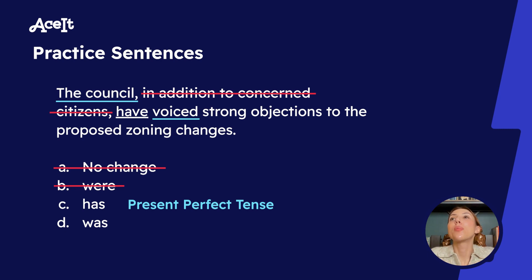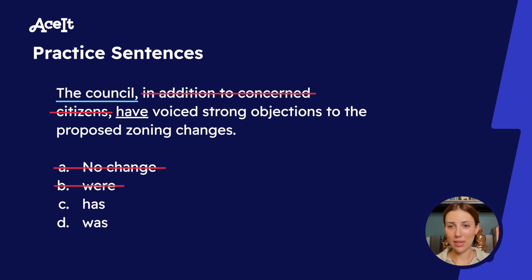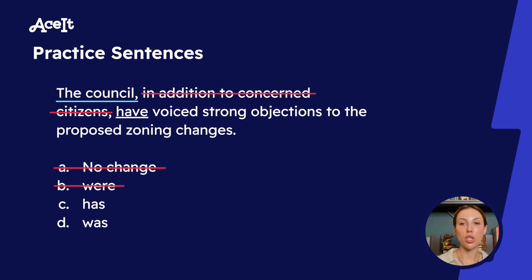But to make absolutely certain D is not correct, let's take a closer look. 'The council was voiced' — 'was' is singular, but it's grammatically incorrect in this context. 'Was' indicates that the subject is receiving the action, but in our sentence the council is doing the action — they're the ones raising and sharing their concerns. Therefore, 'was voiced' is incorrect, and our answer is C.